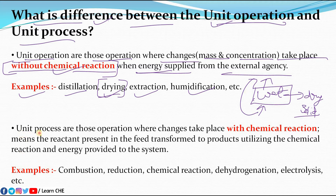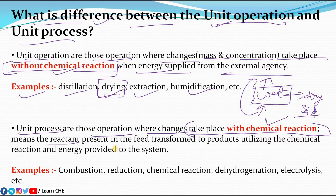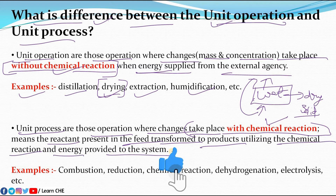Now what is unit process? Unit processes are those operations where changes take place with chemical reaction. Whatever changes we see here take place with chemical reaction. We can simply say that a reactant present in the feed is transformed into a product utilizing chemical reaction or the energy we provide into the system.